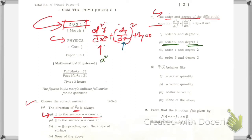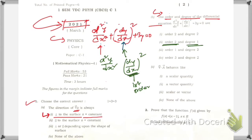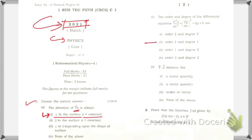We have two differential coefficients: one of first order with power 2, and one of second order. We take the highest order differential coefficient, which is second order, so order is 2. The power on this highest-order coefficient is 1, so degree is 1. Also note: the divergence of a vector is always a scalar quantity.